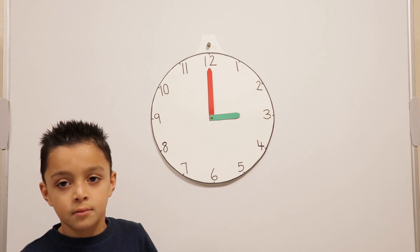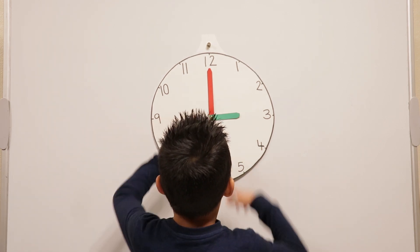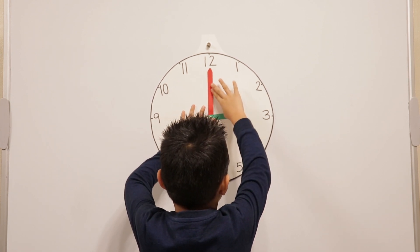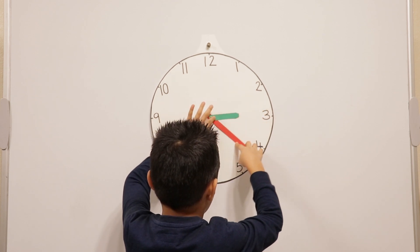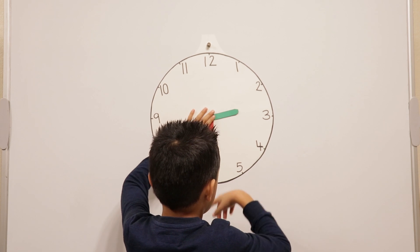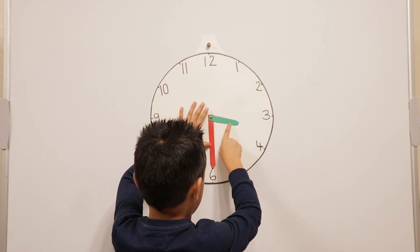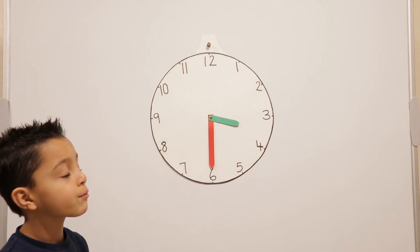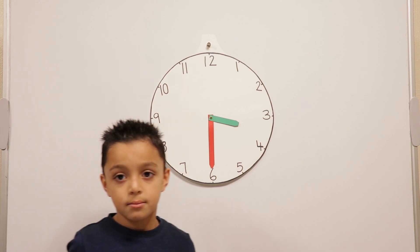Can you show us what half past three is, explaining the position of the hands? The minute hand when it's half past has to go halfway around the clock to the six, and then the hour hand goes in the middle of three and four. When it's half past, the minute hand is always pointing to the six.